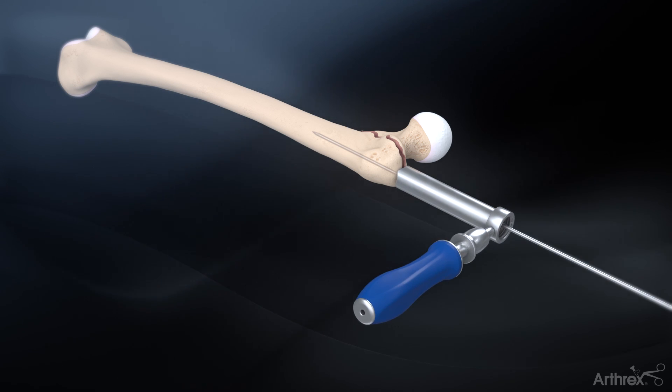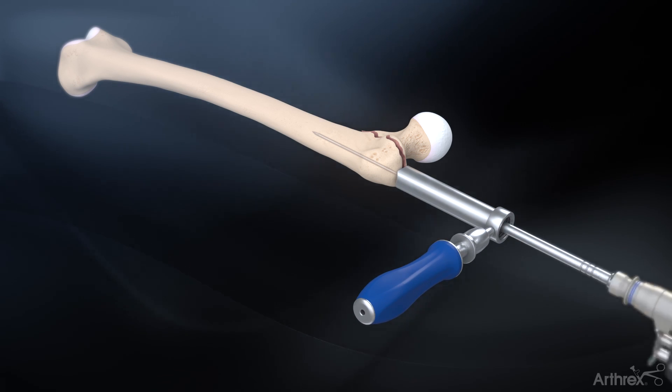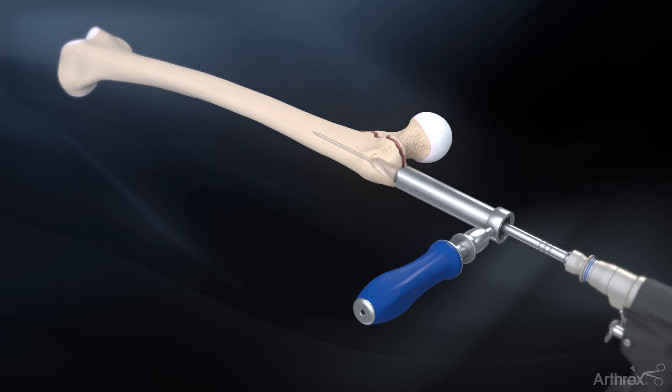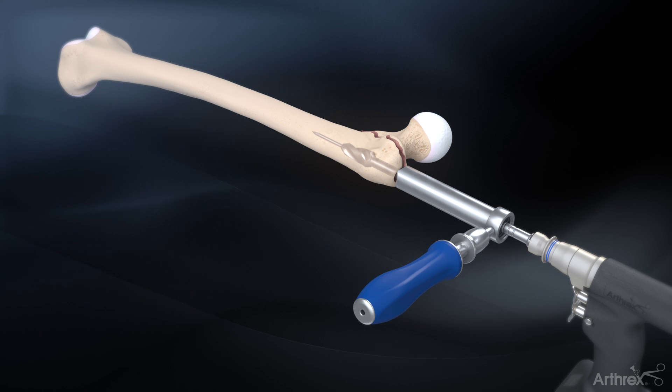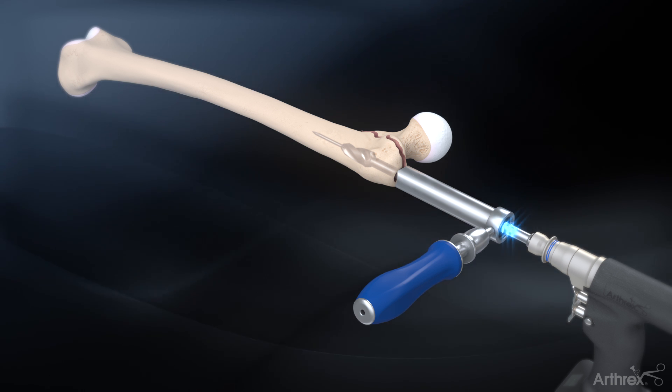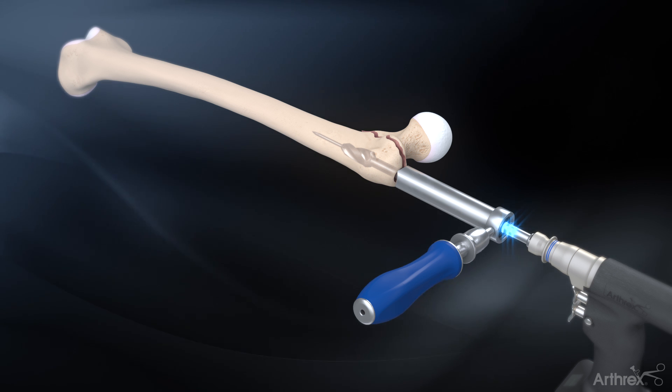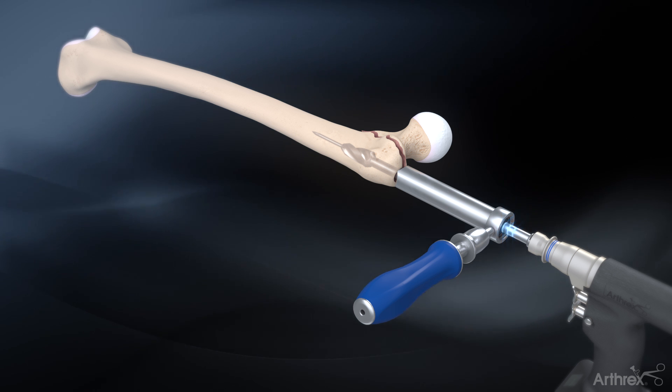Remove the black pin guide and ream over the guide pin with the 16.5 mm cannulated entry reamer. The entry reamer has grooves which are read from the top of the soft tissue protector. The grooves indicate the reaming depth needed to insert the nail flush, 5 mm, or 10 mm deep into the femur.